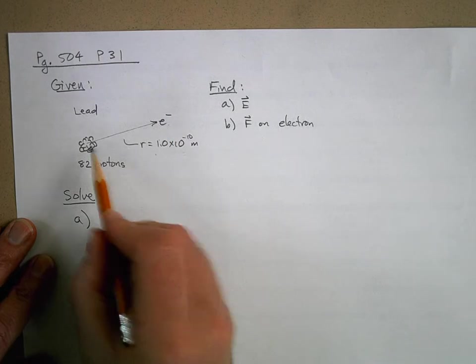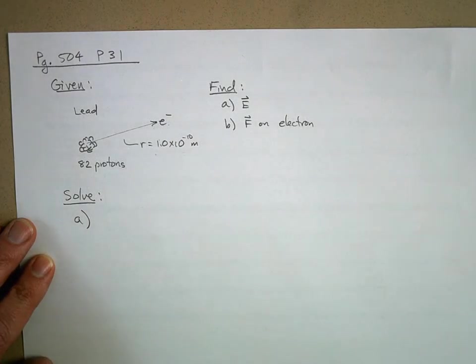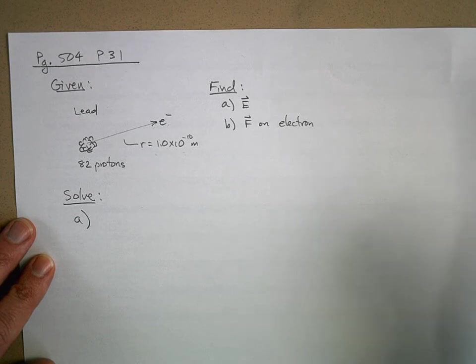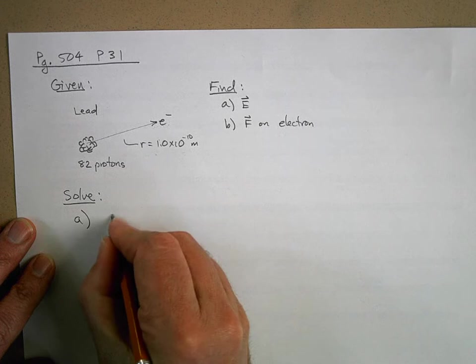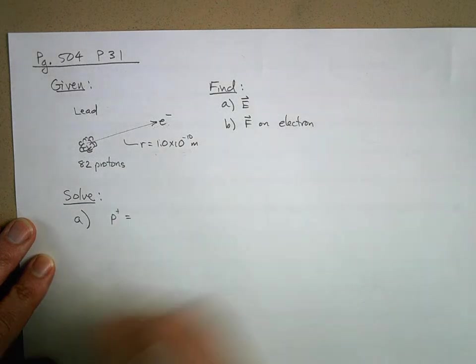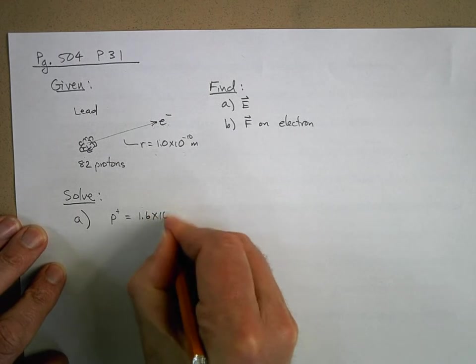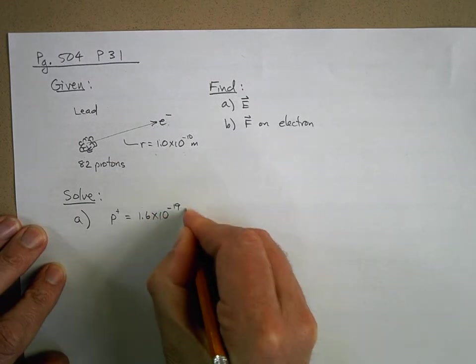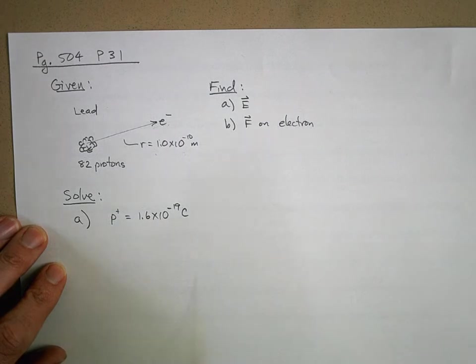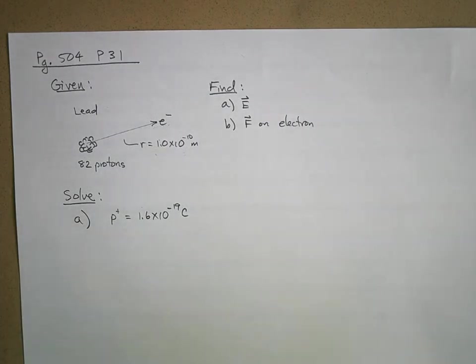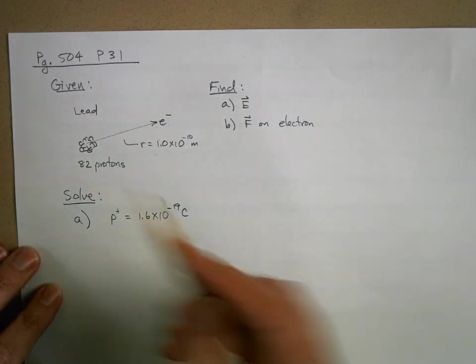Let's do part a. We want to know what is the electric field at this location in space due to these 82 protons. We know that protons have a positive charge, but what is the charge on a proton in coulombs? It's very tiny. The charge on a proton is equal to 1.6 times 10 to the negative 19 coulombs, and by the way, that's the charge on an electron as well, except the electron has a negative charge or an opposite charge.